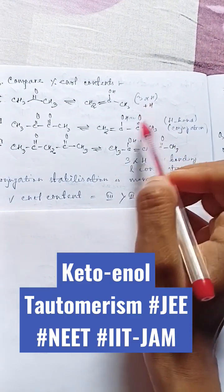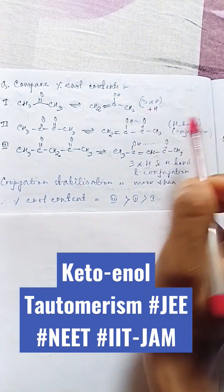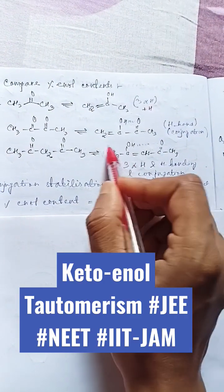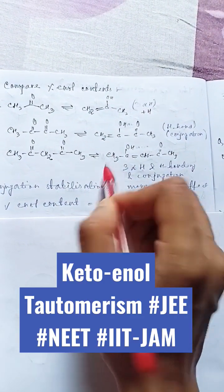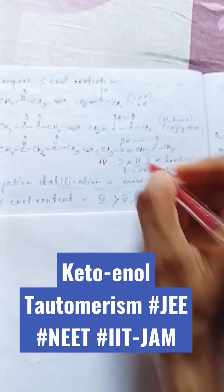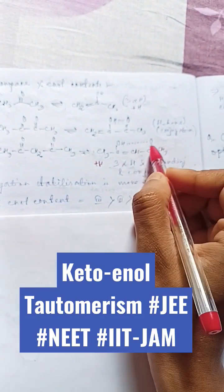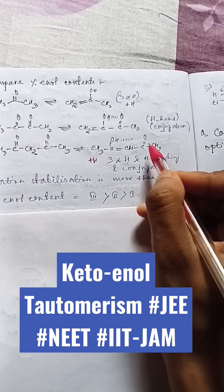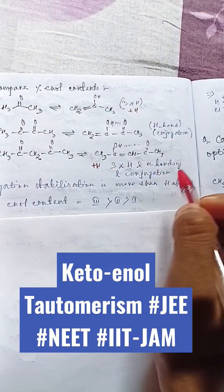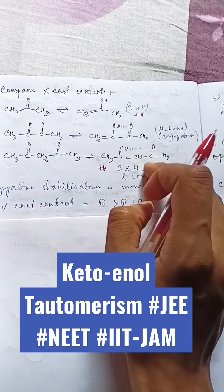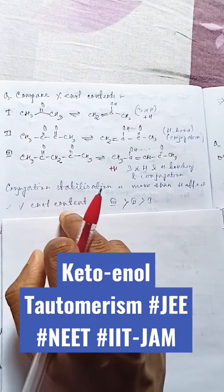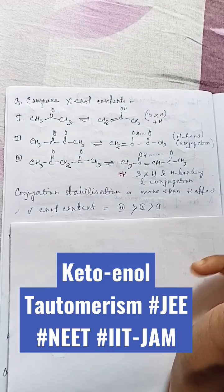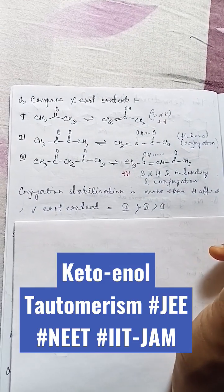In the third example, there are three alpha hydrogens, so the +H effect is operating, and also there is hydrogen bonding and conjugation — sigma pi sigma pi sigma. So this one is the most stable. Therefore, the ranking of enol content percentage is: third, then second, then first. I hope you understood the concept, thank you.